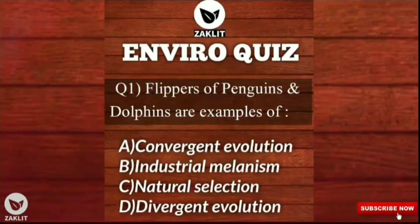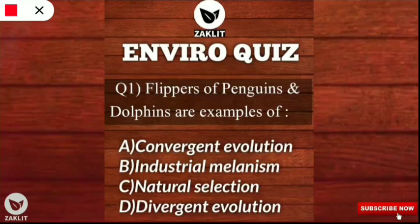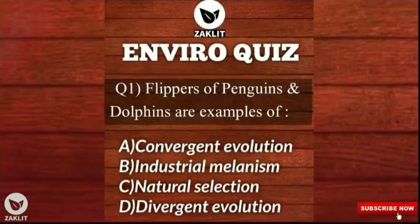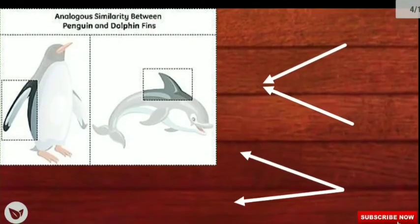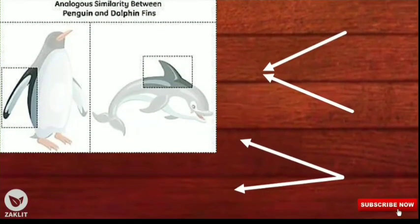The first question was: flippers of penguins and dolphins are examples of what kind of evolution or selection? The correct option is option A — they are examples of convergent evolution.